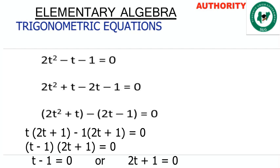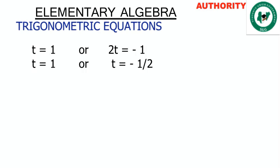We pick one bracket and group the values outside: (t minus 1)(2t plus 1) equals 0. So t minus 1 equals 0 or 2t plus 1 equals 0. From the first: t equals 1. From the second: 2t equals minus 1, so dividing both sides by 2, t equals minus 1 over 2.